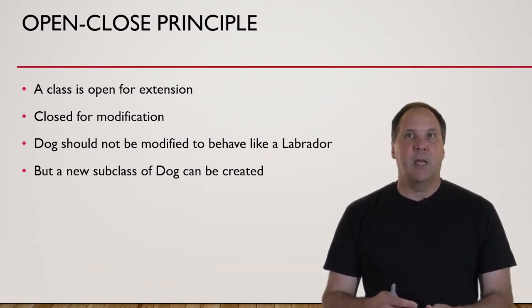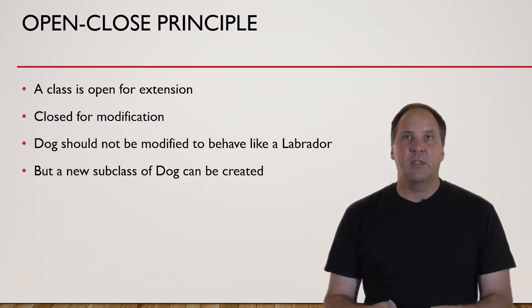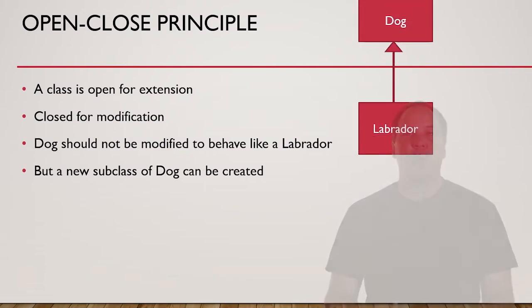Originally this mainly applied to inheritance. If you have an existing class called Dog and you want to add a fetch capability — like a Labrador Retriever would have — that might impact existing code. So rather than modifying the Dog class, the correct option is to create a new subclass called Labrador Retriever. The open-close principle in action tells us we can't modify a class, but we can extend it.